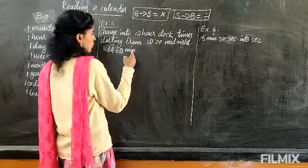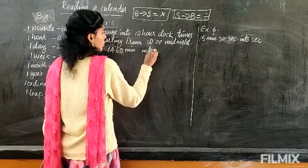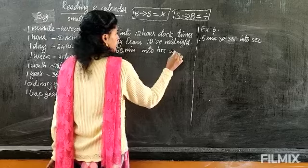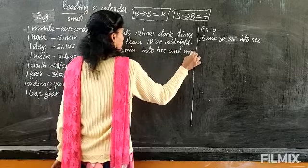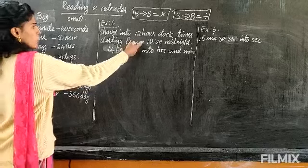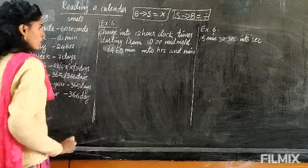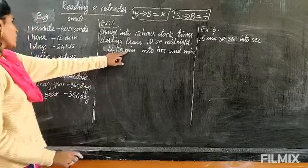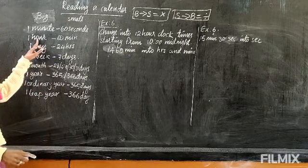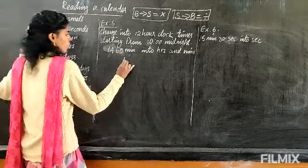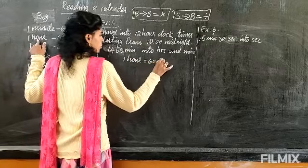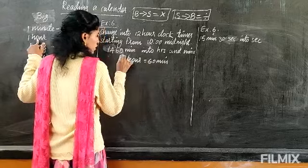So this is actually minutes converted into hours and minutes. We are going to convert minutes into 12 o'clock format — minutes into hours. So let's write the formula: 1 hour equals 60 minutes. This is the formula.